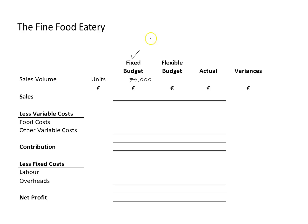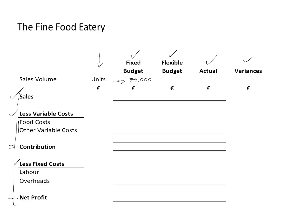So I have the columns mentioned: fixed budget, flexible budget, actual results, and variances. I've slotted in a little column here for units. You can see I've already put in the number of units — i.e. the number of customers or covers — projected to be 75,000. Down here I have my financial information in a marginal costing format: sales, less my variable costs — food and other variable costs — equals the contribution, less the fixed costs, equals the profit.